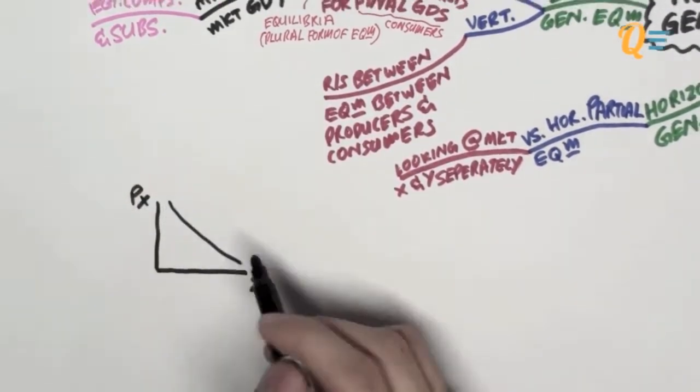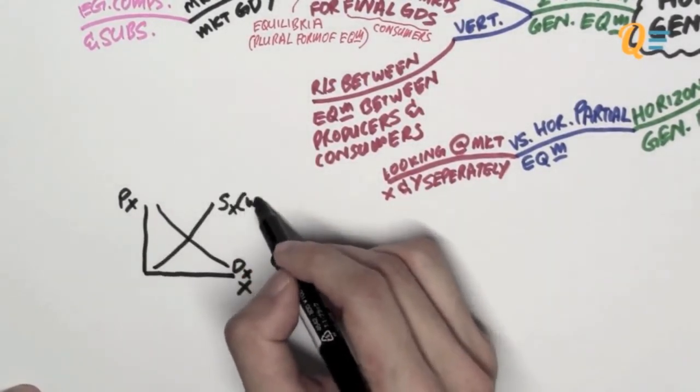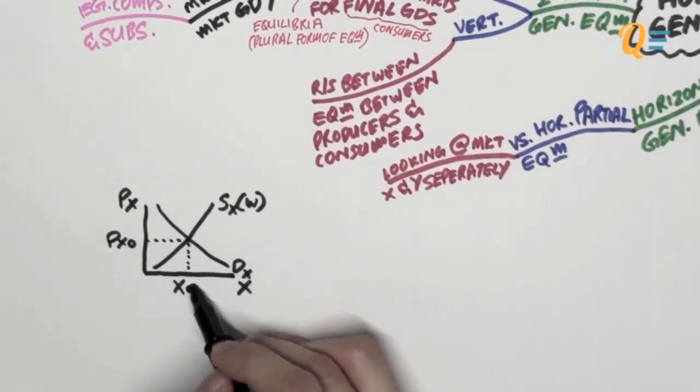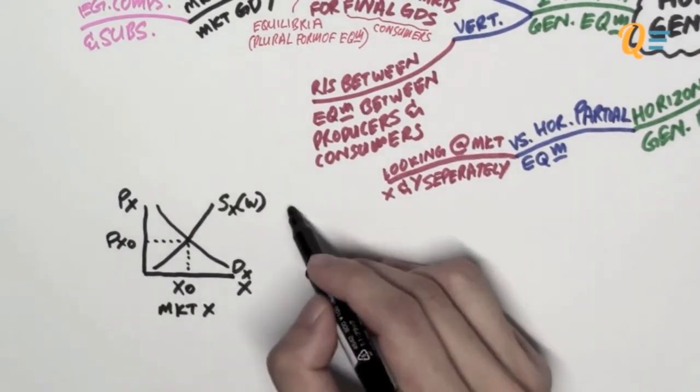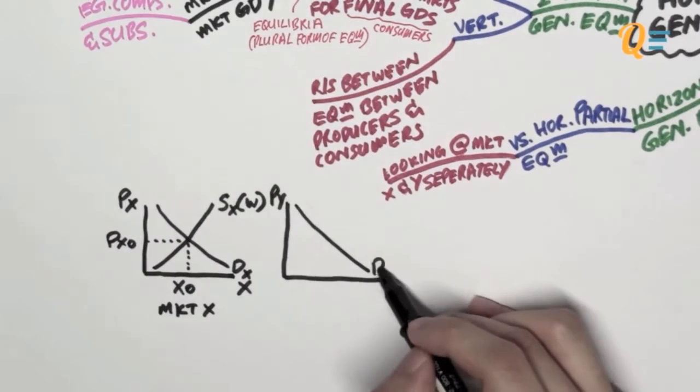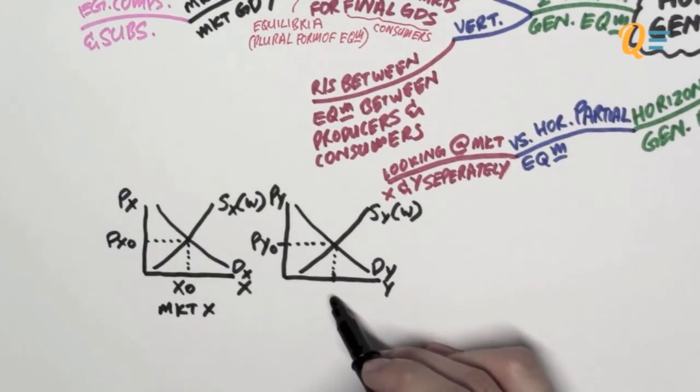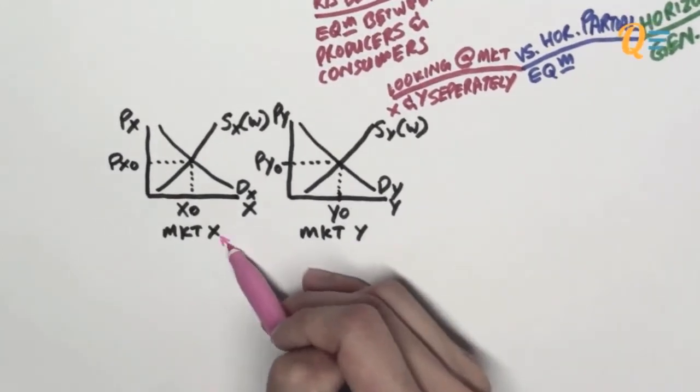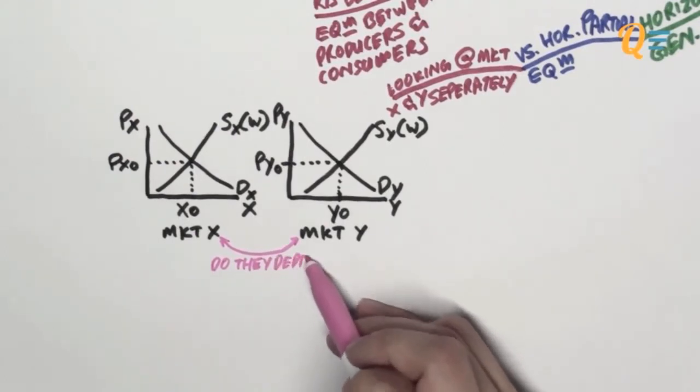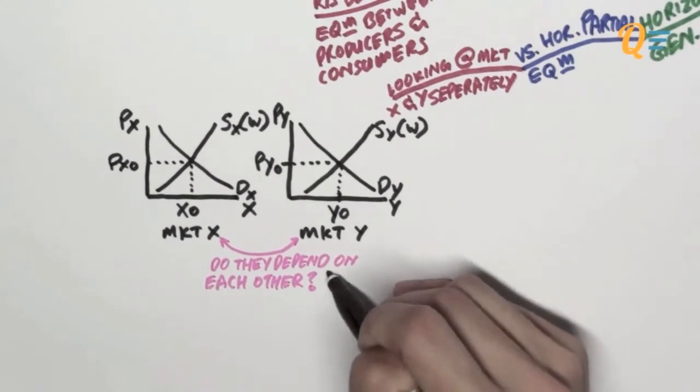If you're going to look at a diagram over here, this is the demand for X, and this is the supply for X which is affected by the wage rate. We've got equilibrium over here which gives you the market price of PX0. That's market X. Then you go on to market Y. This is the demand for Y and the supply of Y, and then you have an equilibrium price of PY0. You're looking at these two markets separately. The question here that you need to ask yourself is: do they actually depend on each other? That is what general equilibrium is trying to ask.